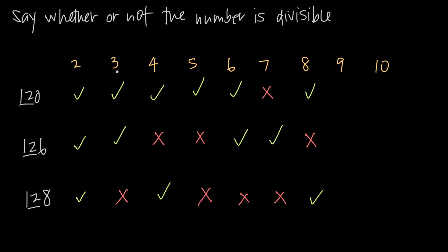The rule for 9 is very similar to the rule for 3. You sum up the individual digits, and if the sum is divisible by 9, then the whole number is divisible by 9. For 120, 1 plus 2 plus 0 is 3, and 3 is not divisible by 9, so 120 is not divisible by 9. For 126, 1 plus 2 plus 6 is 9, and 9 is divisible by 9, so 126 is divisible by 9. For 128, 1 plus 2 plus 8 is 11, and 9 doesn't go into 11 evenly, so 128 is not divisible by 9.